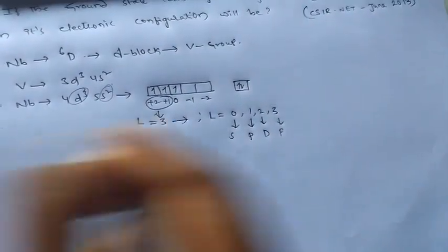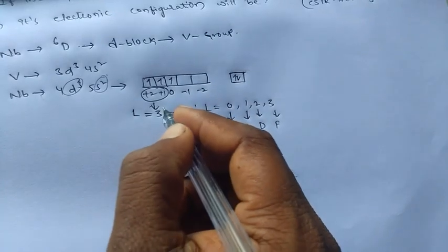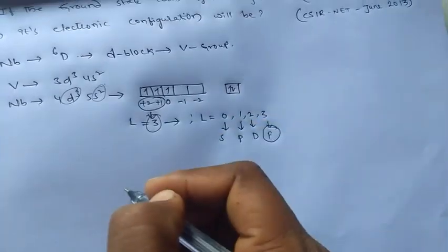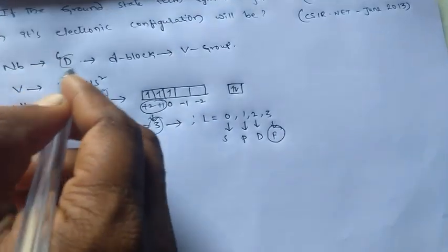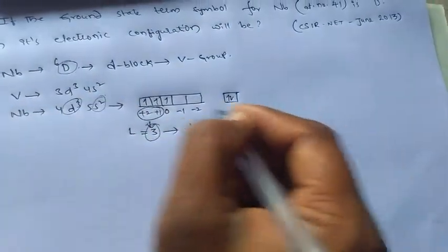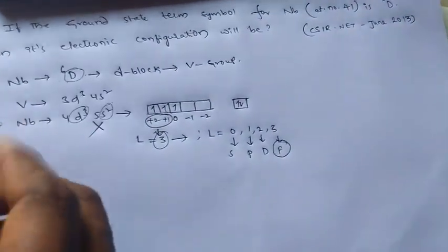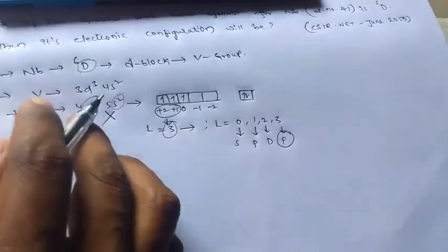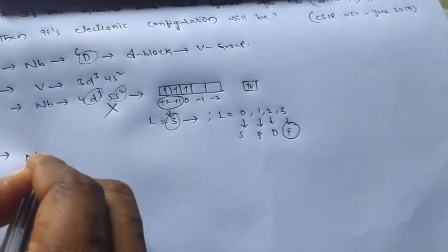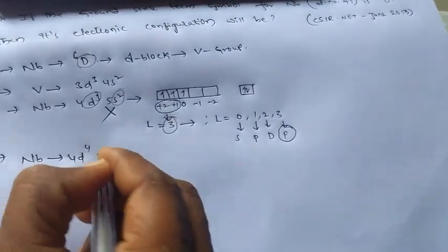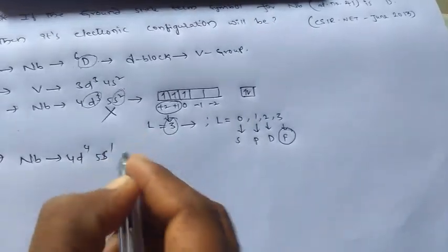Okay, then from this, if you observe, L is equal to 3. Hence, the term symbol must be F. But we have D. So this electronic configuration is not correct for this term symbol D6. Now we need to check another electronic configuration for niobium.